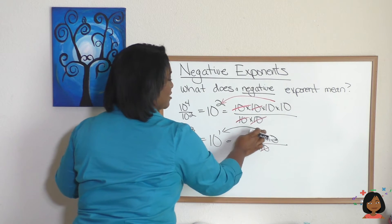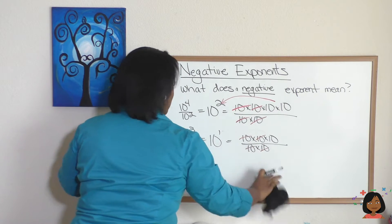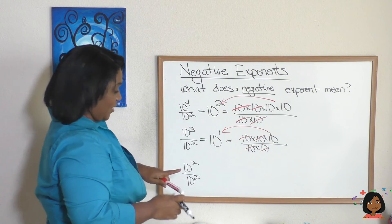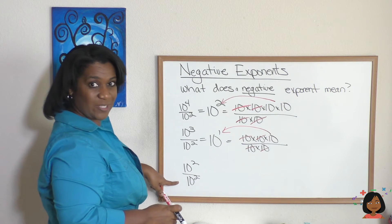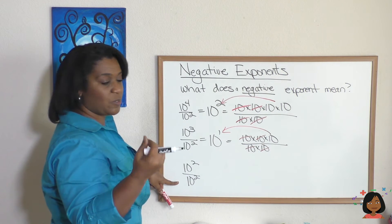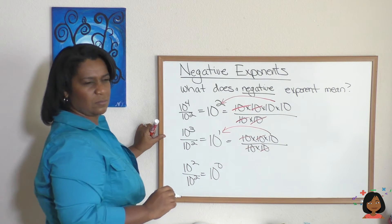Okay, I should have used a red marker there just to be consistent. Give me a second. I don't want to mess you up. 10 squared over 10 squared. Let's subtract the exponents. 2 minus 2 is 0. So 10 to the 0. What does it mean? Let's go ahead and do it.